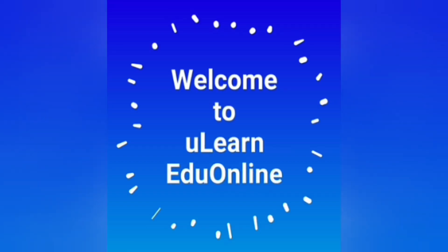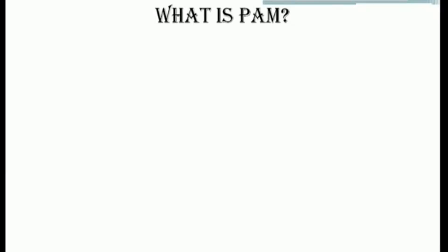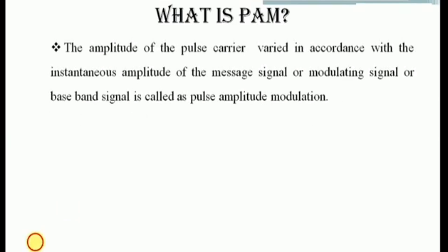Hello everyone, welcome back to the channel 'You Learn Education Online.' Today we will discuss the generation and detection methods of pulse amplitude modulation signal. The PAM signal is defined as the amplitude of a pulse carrier that is varied according to the instantaneous amplitude of a message signal.